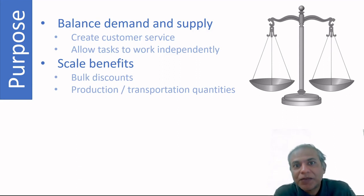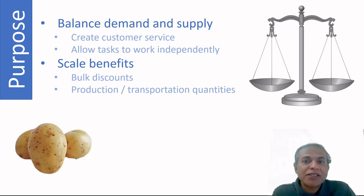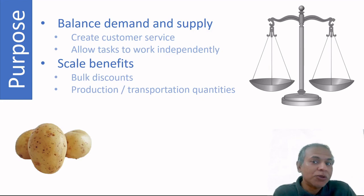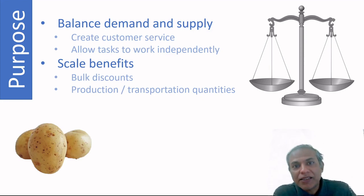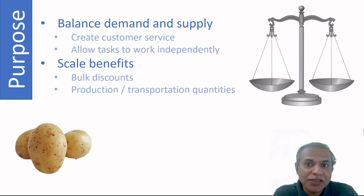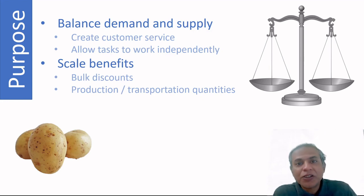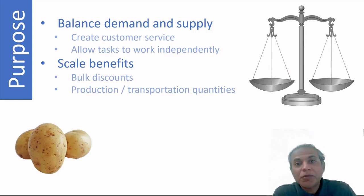The first purpose is that inventory creates a buffer between demand and supply. For example, potatoes are cultivated for only two months in Idaho but used year-round. When supply is seasonal but demand is year-round, you produce in a particular season, store it, and continue to use it throughout the year. In fact, many potatoes in US supermarkets are on average more than six months old.